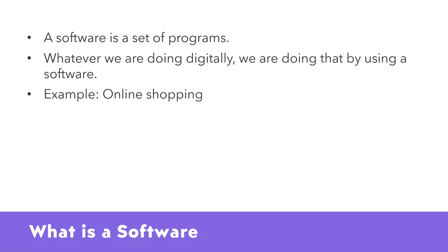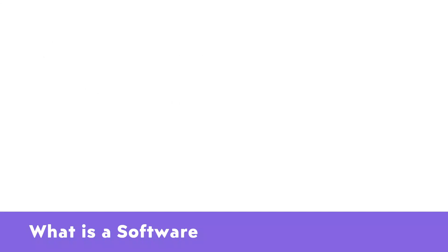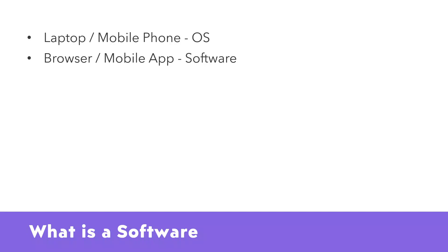Let's talk about one example. Let's say I want to buy something using an online website. The first step is you need at least a laptop or a mobile phone. If you are using a laptop, chances are that you are using the Windows, Mac, or Linux operating system. On the other hand, if you are using a mobile phone, you are likely using Android or an iPhone. If you notice carefully, these operating systems — Windows, Mac, Android — are all software in themselves.